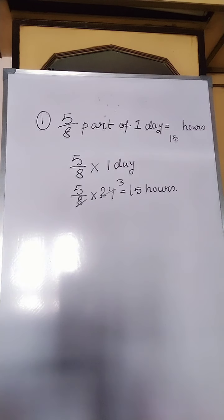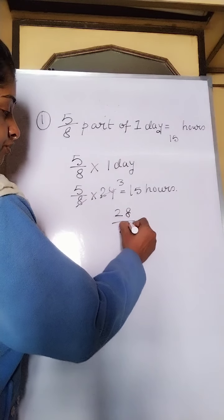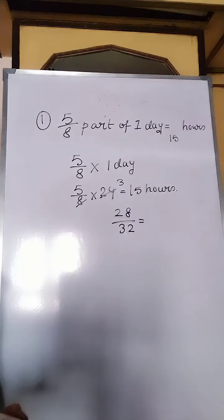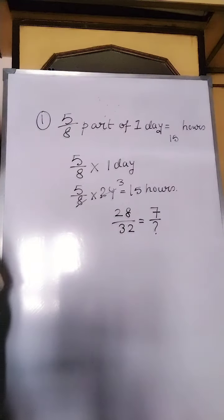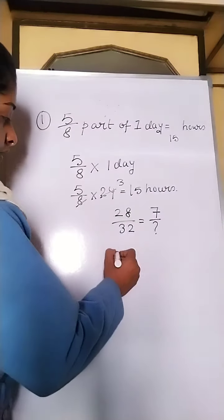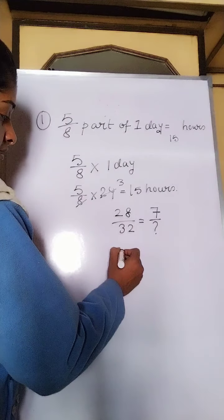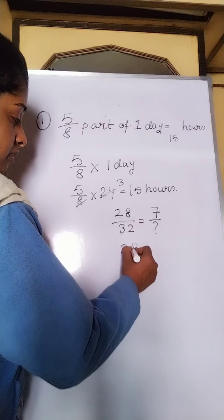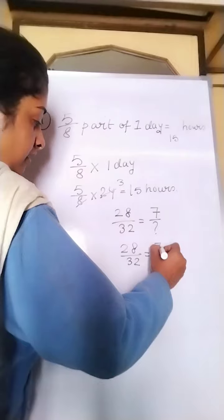Let's move to another objective sum. Suppose you are given 28 by 32 is equal to 7 by how much? So how will you do this? You will consider the question mark part as x. So 28 by 32 is equal to 7 by x.